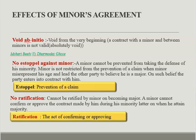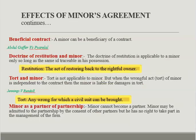The next point is beneficial contracts. A minor can be a beneficiary of a contract. An agreement made for the benefit of a minor is enforceable by him. An important case example is Abdul Gafoor versus Perilal.